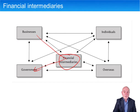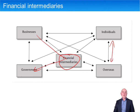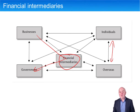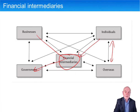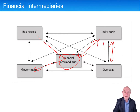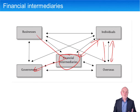We also have individuals trading with overseas parties, or simply changing money to go on holidays overseas. Again, it could happen directly, but the chances are it's going to go through a bank. We pay some money into the bank, the bank pays us some foreign currency out, and then we can take that on our holidays and pay overseas restaurants, hotels, and so on.